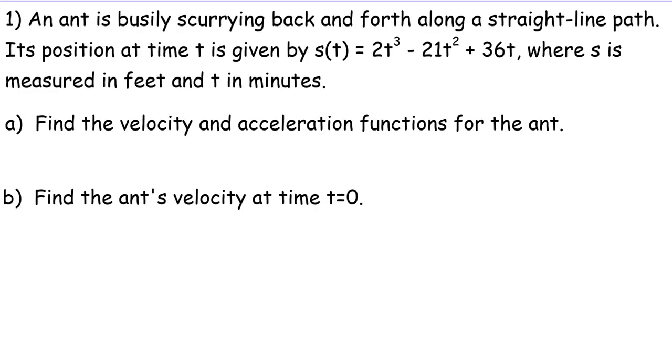So here's the problem that we're going to do as an example. And it has five or six parts. An ant is busily scurrying back and forth along a straight line path. Its position at time t is given by s(t) = 2t^3 - 21t^2 + 36t, where s is measured in feet and t in minutes. Okay, so there's a straight line path, and there's an ant, and it's just going back and forth. It's not going off the path or anything. It's just back and forth on the path. That's the idea.